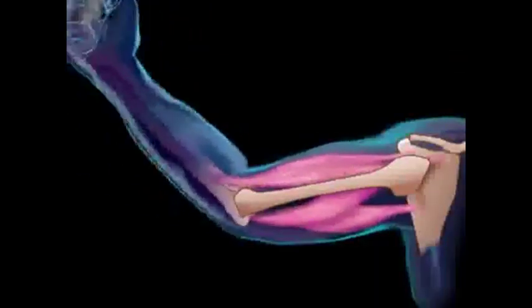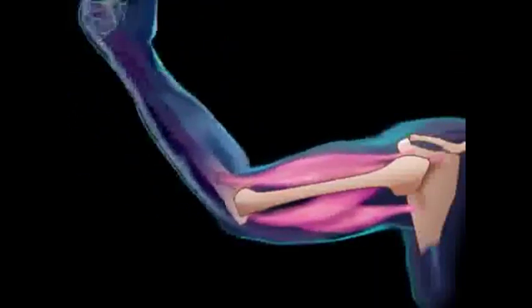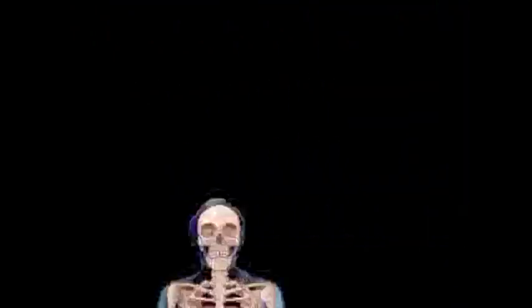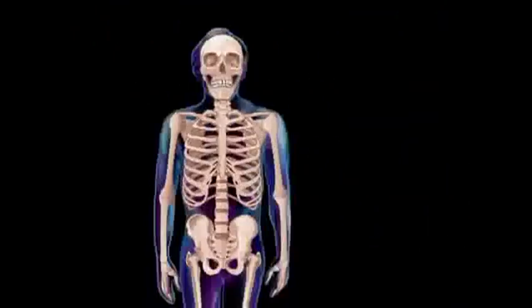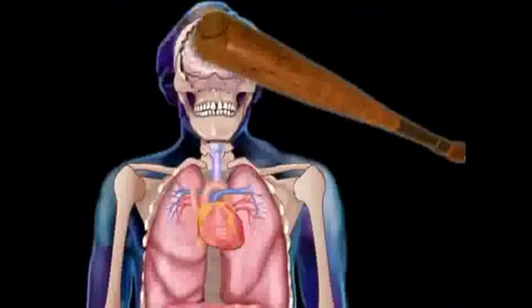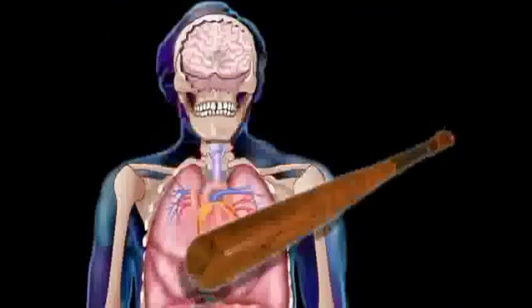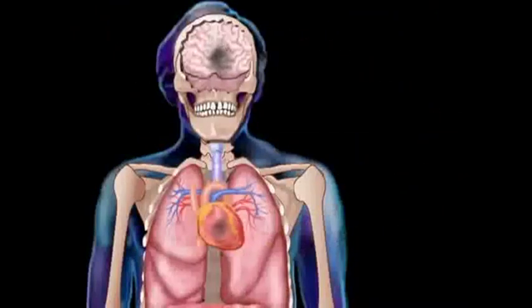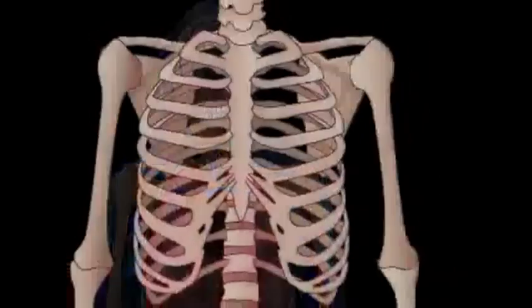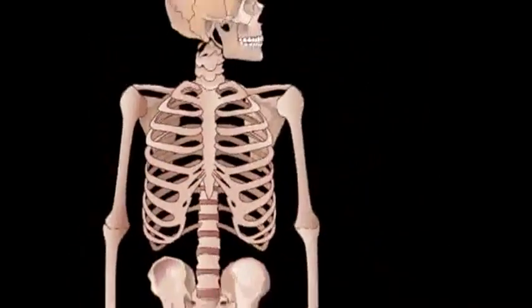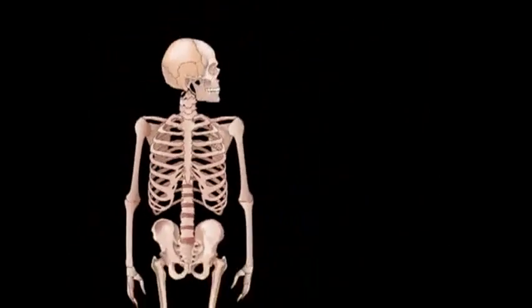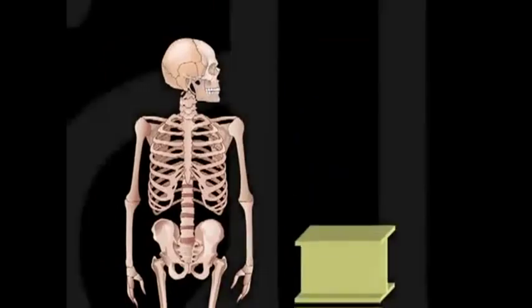Our muscles, pulling this way or that way on our bones, produce movement. And without the protection of our skeleton, even a simple bump on the head or chest could injure vital internal organs. Pound for pound, the bones of the skeletal system are stronger than steel.